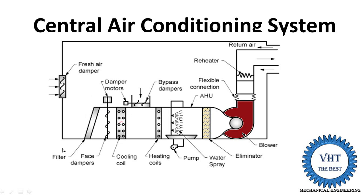Now step by step, let us understand the function of each component. Fresh air comes in through the dampers. This fresh air damper is operated by a thermostat, which measures the return air temperature or room air temperature, and on that basis supplies fresh air to the AHU unit. The air is filtered and then supplied to the dampers. The damper controls the quantity — the mass flow rate — of air supplied to the cooling coils.